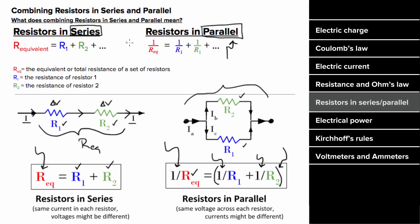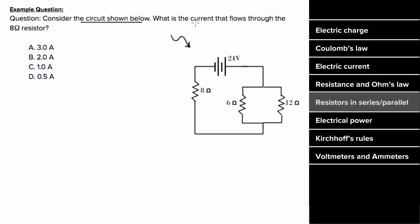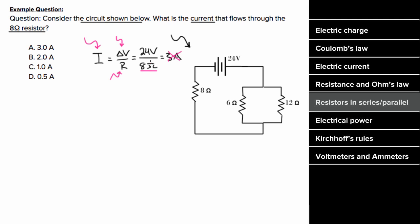So what's an example problem involving resistors in series and parallel look like? Let's say we have this circuit shown below and we want to know what current flows through the eight ohm resistor. Now you might be tempted to say that since Ohm's Law says the current is delta V over R, we can just plug in the voltage of the battery, which is 24 volts, divided by eight ohms, and get three amps. But that's not right at all. When using Ohm's Law, the current through a resistor R equals the voltage across that resistor divided by its resistance. So the voltage across the eight ohm resistor is not going to be the full 24 volts of the battery — it's going to be less than 24 volts, because there are voltage drops across the six and twelve ohm resistors.